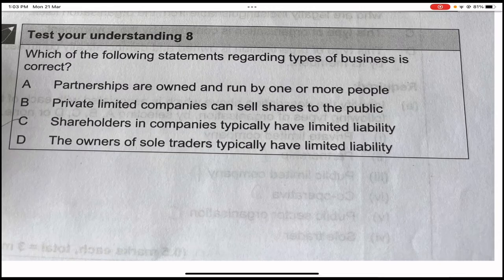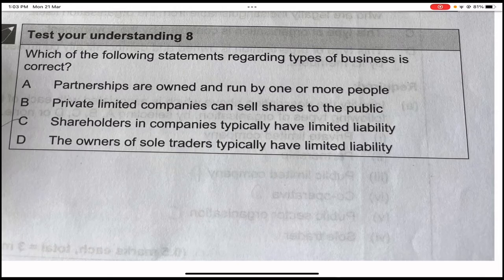Which of the following statements regarding types of business is correct? Partnerships are owned and run by one or more people — false, it is two or more. Private limited companies can sell shares to the public — false, only public limited companies can do that. Shareholders in a company typically have limited liability — true. Owners of sole traders typically have limited liability — false, they have unlimited liability. The answer is C.